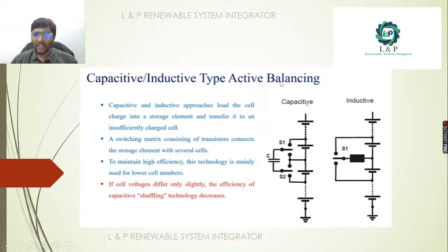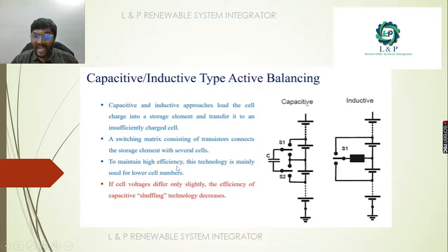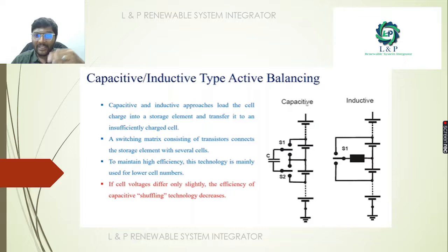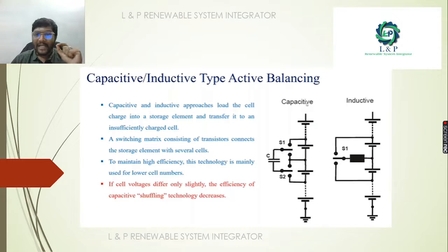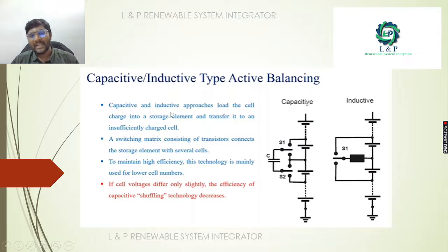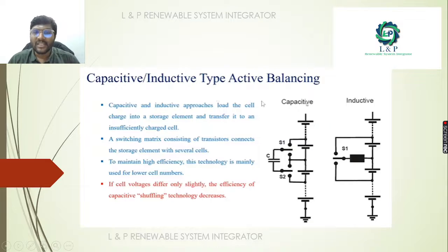In the active balancing method, to maintain high efficiency of individual cells, the BMS monitors the voltage of each cell. If it finds any low voltage, it will try to charge the insufficiently charged cell immediately. Through this capacitive or inductive approach, it will load the cell charge into the storage element and transfer it to the insufficiently charged cell immediately.